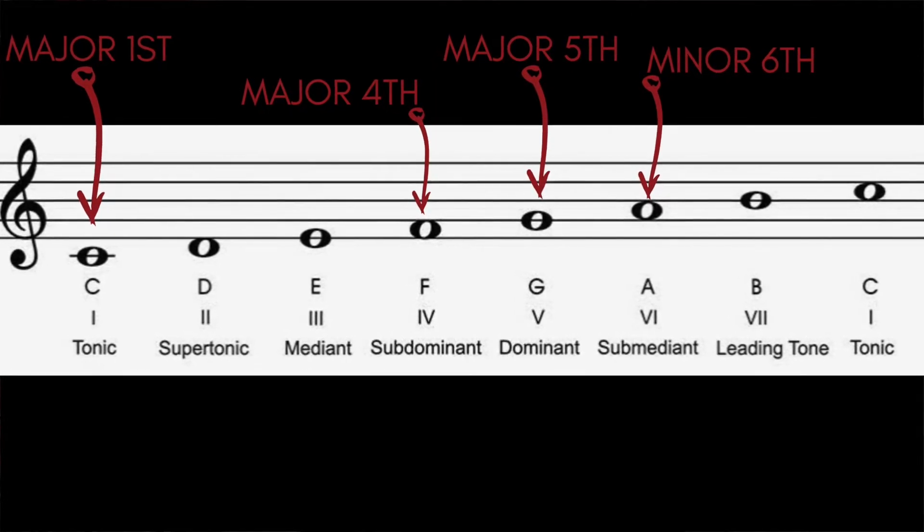So again, using our C major scale as an example, our pop chord progression will be C, G, A minor, and F. This chord progression is often used in pop music and it can be found in a very long list of popular songs.